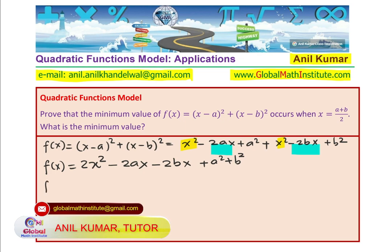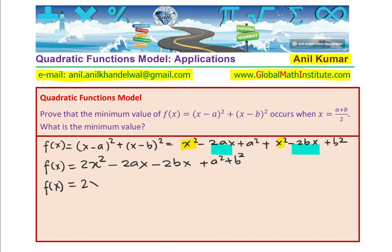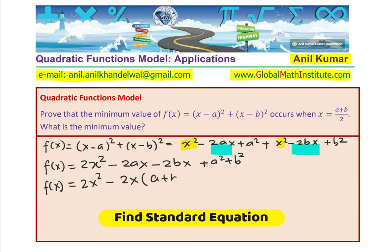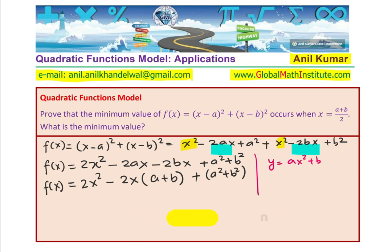Combining like terms, we get 2x² - 2ax - 2bx + a² + b². We can rewrite this as 2x² - 2(a + b)x + a² + b². Now, what is the axis equation? In standard form, if we have y = ax² + bx + c, the axis of symmetry is at x = -b / 2a.